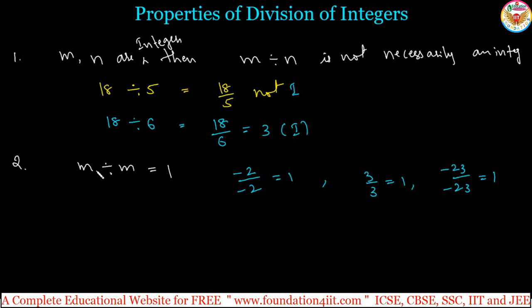Any number divided by the same integer with the same sign, then the result is 1 except zero, means except zero. So, any non-zero m divided by m is equal to 1, right? This is the rule.